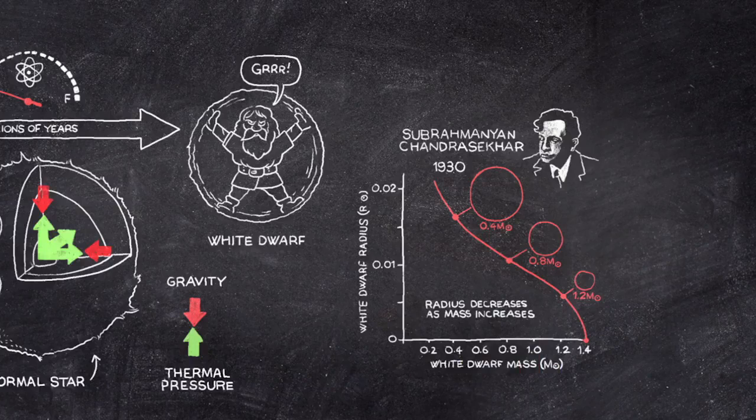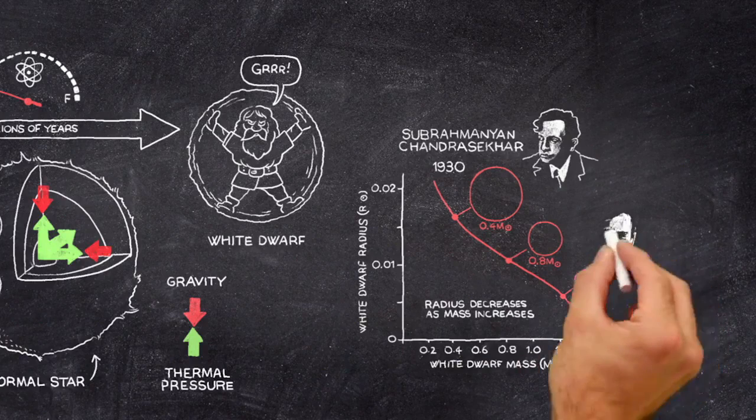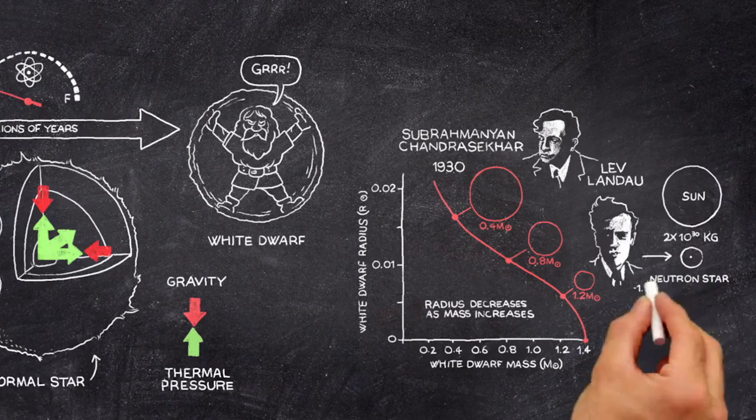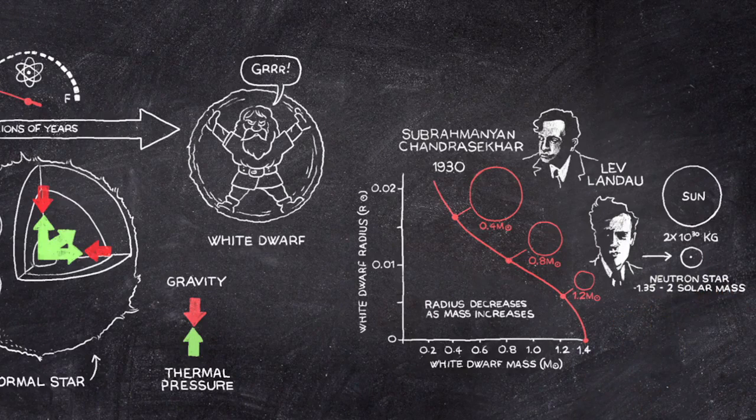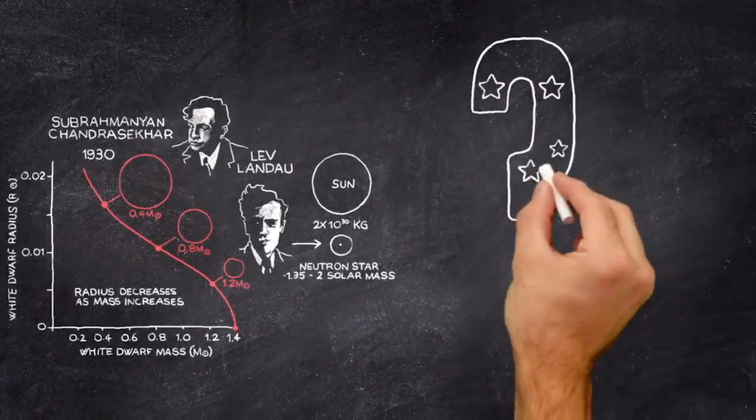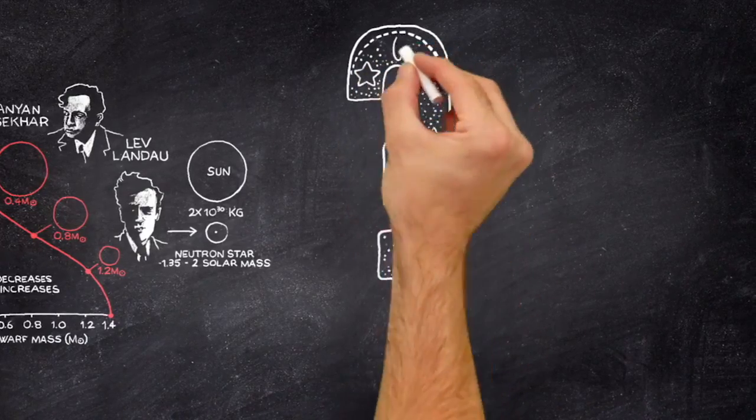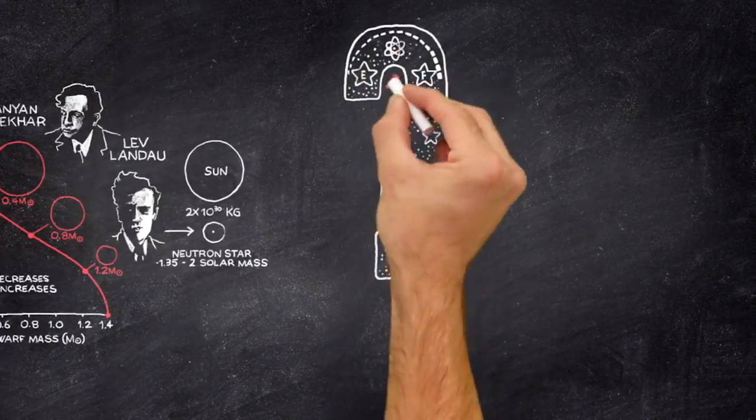A similar maximum mass was calculated by Soviet physicist, Lev Landau, for a star made entirely of neutrons. What would be the fate of those countless stars with greater mass than a white dwarf or neutron star, when they had exhausted nuclear fuel?